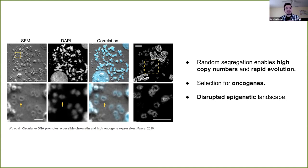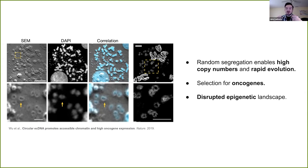Extra-chromosomal DNA consists of particles of DNA that have broken off of linear chromosomes and circularized. They are implicated in cancer because they are biased toward carrying genes that drive cancer's aggressive nature. Because they don't segregate evenly when cells divide — randomly going into one cell or the other — they can accumulate in very high copy numbers, enabling cancer cells to amass very high amounts of cancer-driving genes and also to evolve rapidly when faced with different chemotherapies.